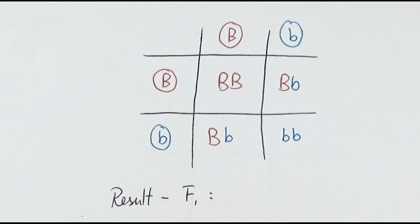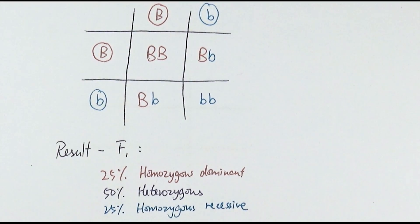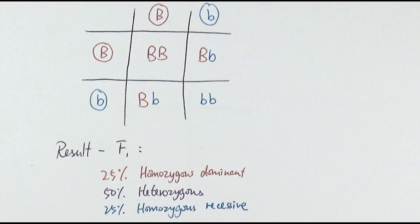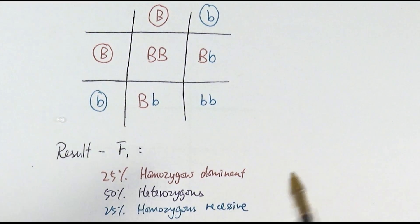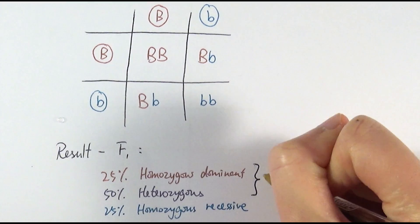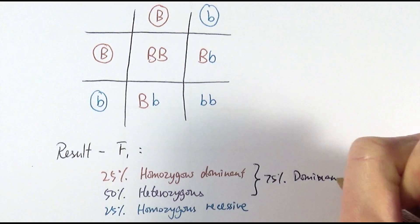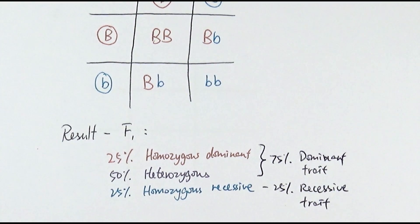In terms of genotypes, 25% will be homozygous dominant, 50% will be heterozygous, and 25% will be homozygous recessive. If the question asks about the phenotype ratio, then 75% would show the dominant trait whereas 25% would show the recessive trait. Just be careful whether they're asking for genotype or phenotype — that is the heterozygous cross.